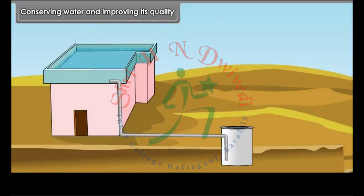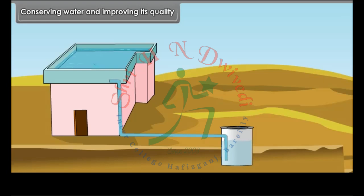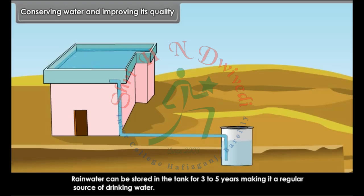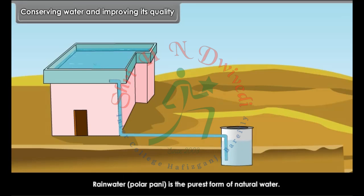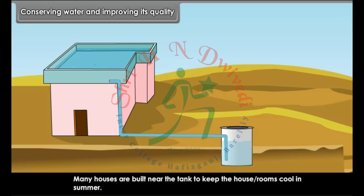Methods to conserve water. Rainwater harvesting: methods for keeping the rain water in reserves are termed as rainwater harvesting. Rainwater can be stored in a tank for 3 to 5 years, making it a regular source of drinking water. Rainwater pool or pond is the purest form of natural water; it is often used to cure ailments of sick people. Many houses are built near the tank to keep the house or rooms cool in summer.